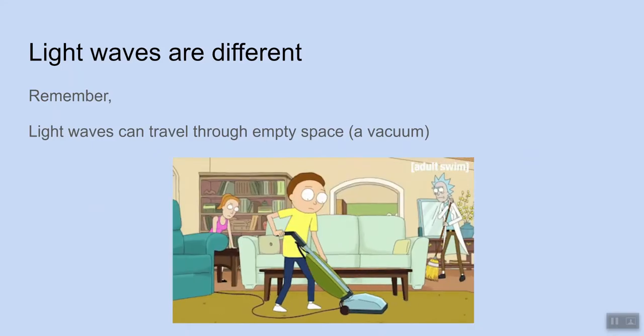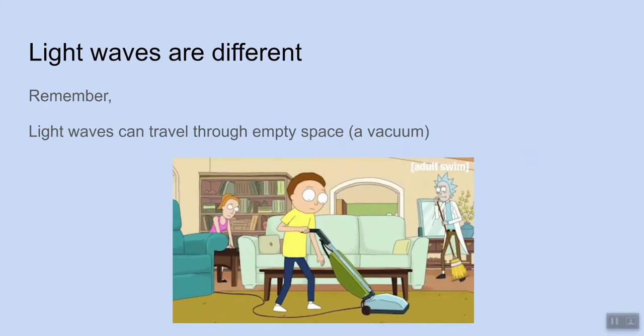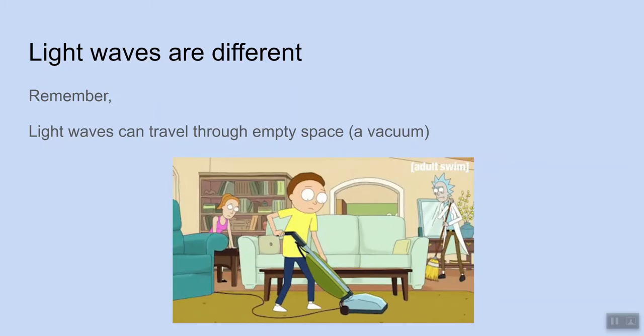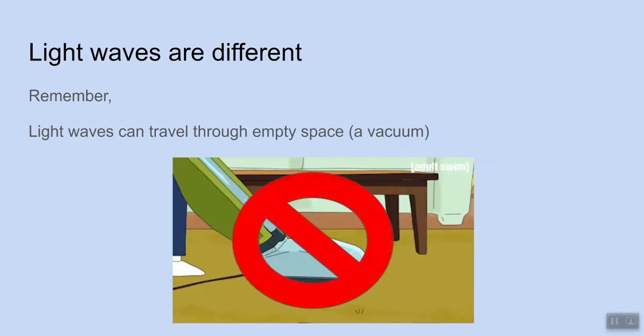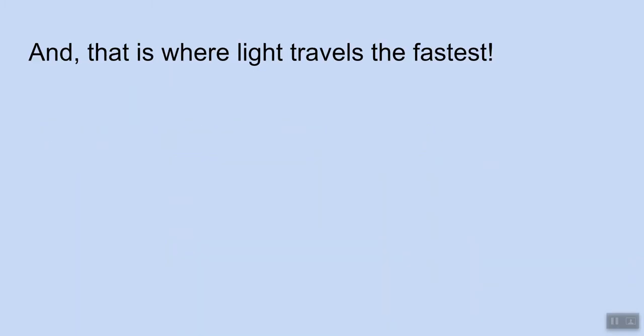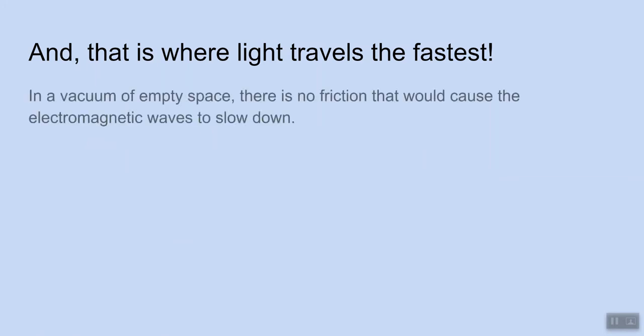But light waves are different, right? Light waves do not require a medium to travel. They can travel through empty space, otherwise known as a vacuum. Once again, not this vacuum, but they can travel through empty space. And that is actually where light travels the fastest. Through a vacuum or through empty space.